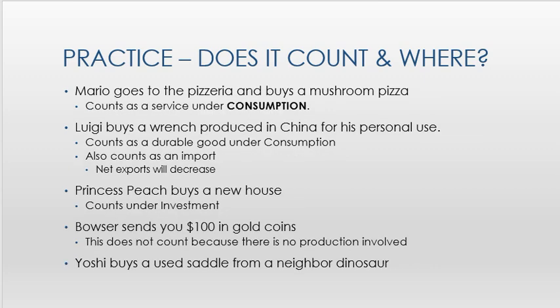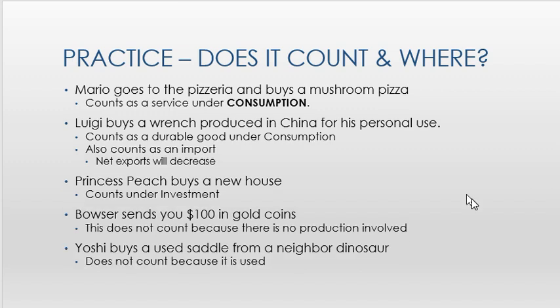Yoshi buys a used saddle from a neighbor dinosaur. Remember, we're measuring production, so if it's a used good, it was not produced in that year — it was produced in some other year — so we don't count used goods in GDP. Those are some examples of how we classify things in the expenditure approach.